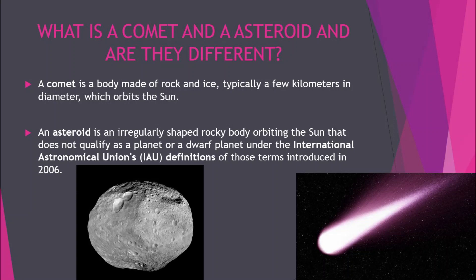An asteroid has an irregular shape due to less gravity. Now you might be wondering what the difference between them is. An asteroid contains water, and so does a comet, but a comet contains so much water that when it reaches near the sun it gets a long tail, as you can see in the image, whereas an asteroid does not have a tail — so it is different from a comet.